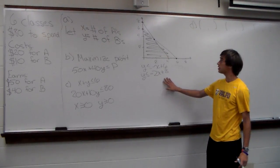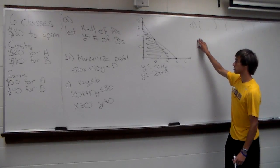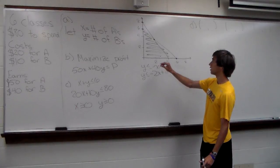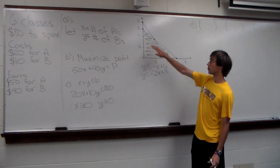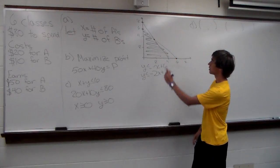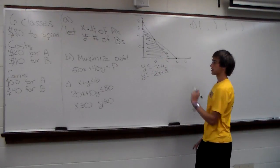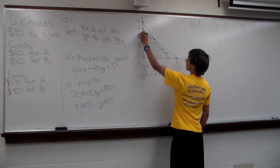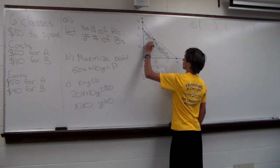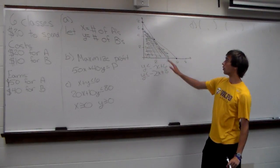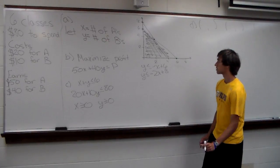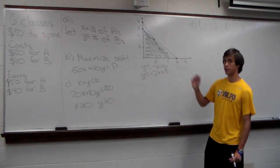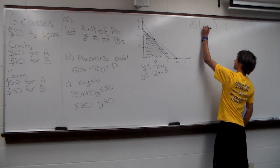Now we're done with part C and moving to part D to find our corner points. The feasible region is where both inequalities overlap in the first quadrant. The first corner point comes from the Y-intercept of Y ≤ -X + 6, which is at (0, 6).